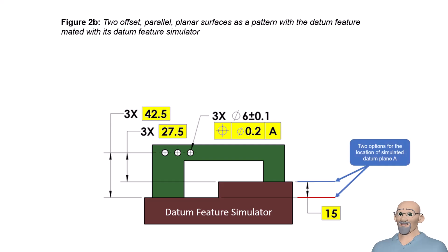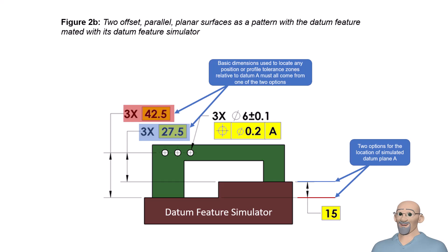Because of this, the origin of any basic dimension on the drawing can be from either location. In this example, the basic 27.5 is coming from the simulated datum plane A shown in blue and the basic 42.5 is coming from the simulated datum plane A shown in red. Either option can be selected when the drawing is created.